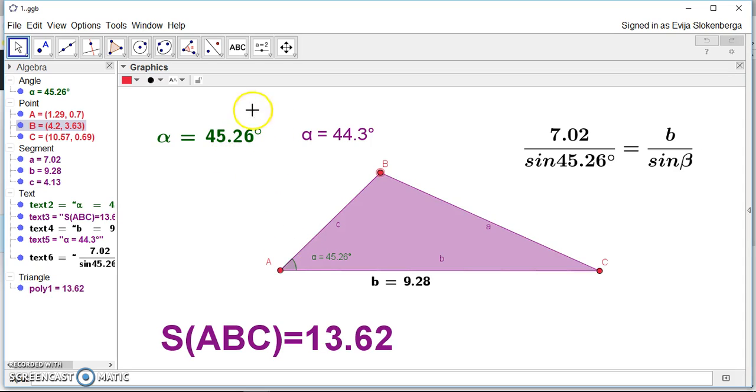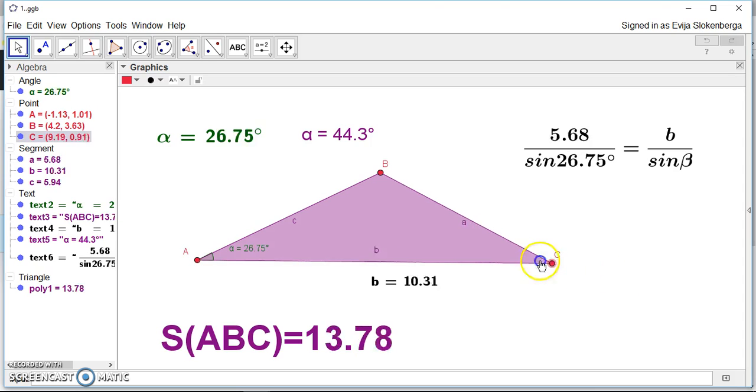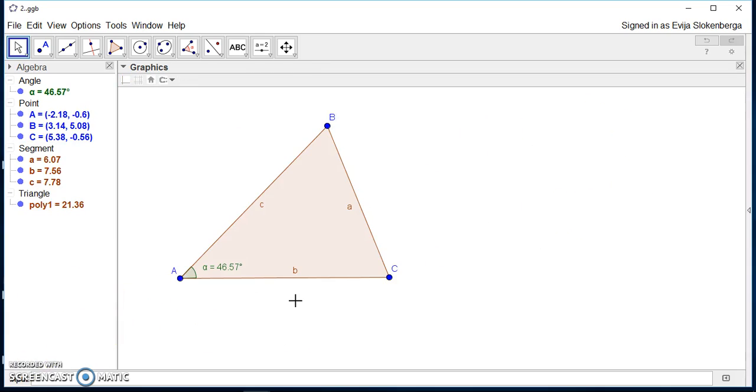And the reason why it is like that is the dynamic text option. This one where it stayed the same as it was before, it's static text where you have just written exact numbers and it stayed the same. But here it changes whatever you do with the triangle. The same we see is with the length of the side and the area of the triangle. And here we see it also changes in the formula.